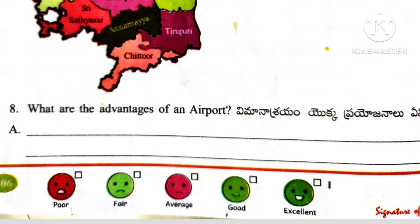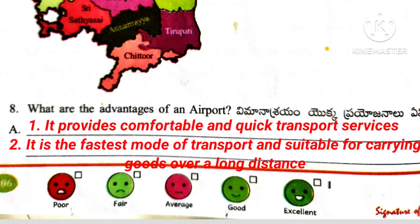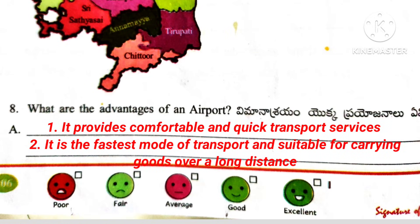Question number 8: What are the advantages of an airport? Answer: It provides comfortable and quick transport services. It is the fastest mode of transport and suitable for carrying goods over a long distance.